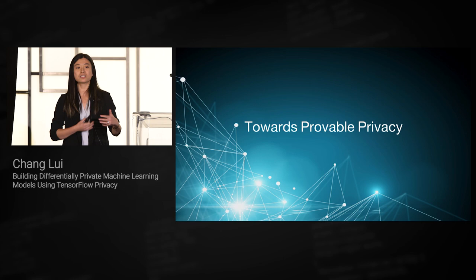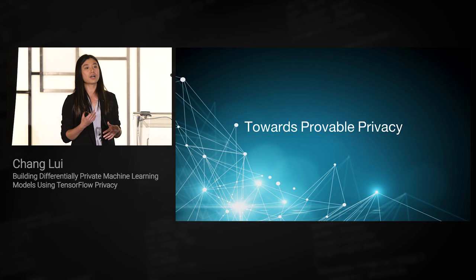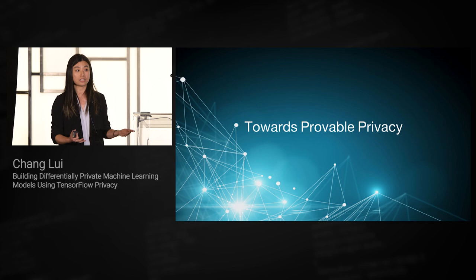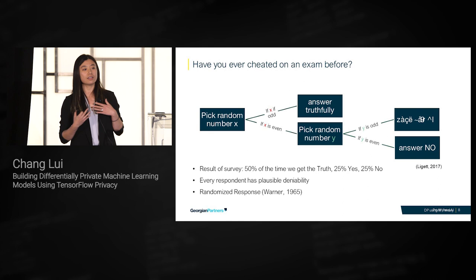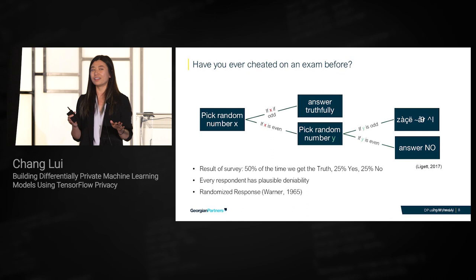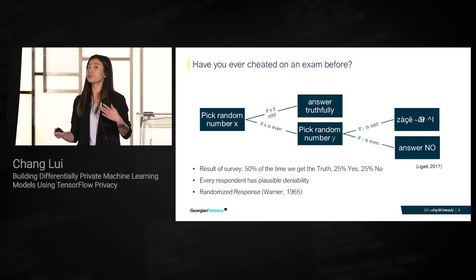Privacy is kind of a buzzword these days. Everybody's talking about privacy, and there are lots of definitions. But can we somehow measure it? Can we put it in terms where we can measure the impact? Can we prove that we have privacy in our algorithms? I'd like to start with a little exercise. Imagine I'm a data collector who wants to learn how many people in this room have cheated on an exam before. If I ask you directly, you might think this is sensitive and not want to share that with me.